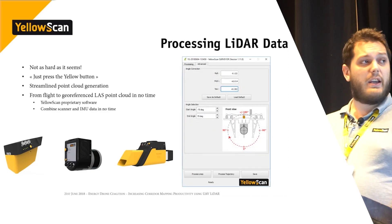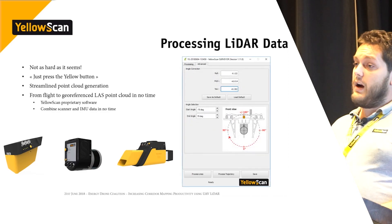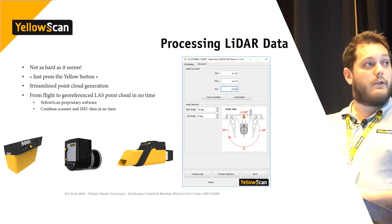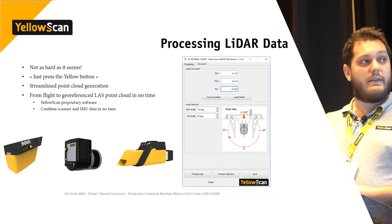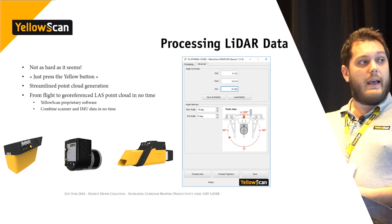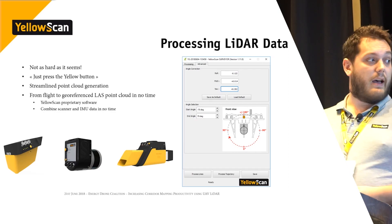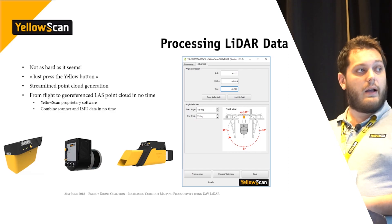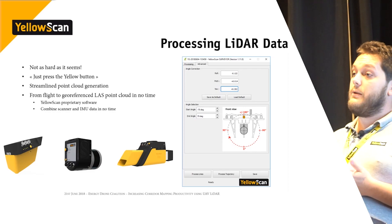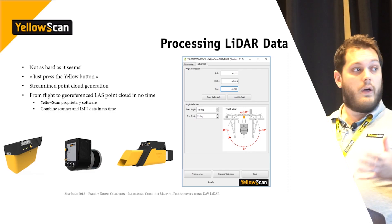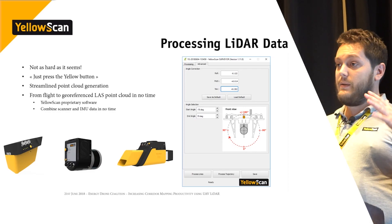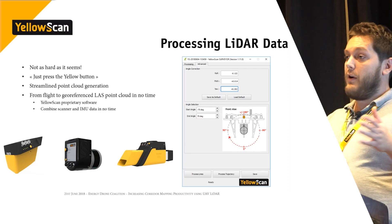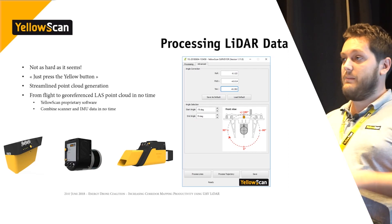You can also tweak the settings. All our units are calibrated when you receive them, so you can enter the calibration angles. All our scanners except the Map or Two scan on a 360-degree basis, so you can select the range of points you want to use and only process those points.